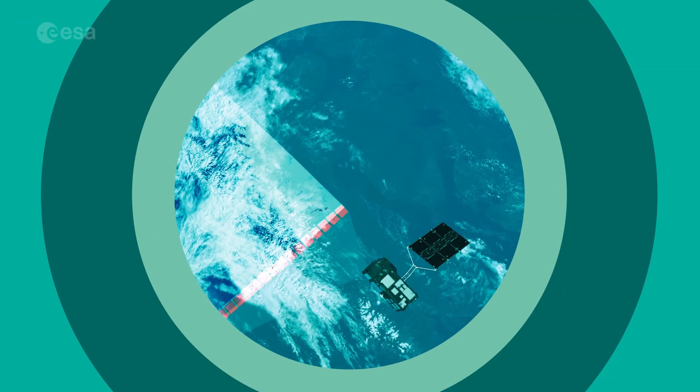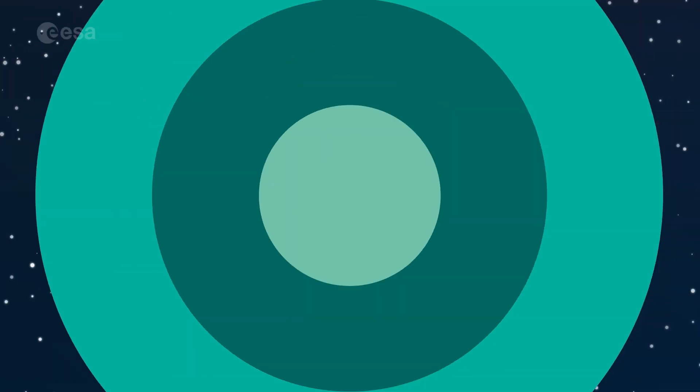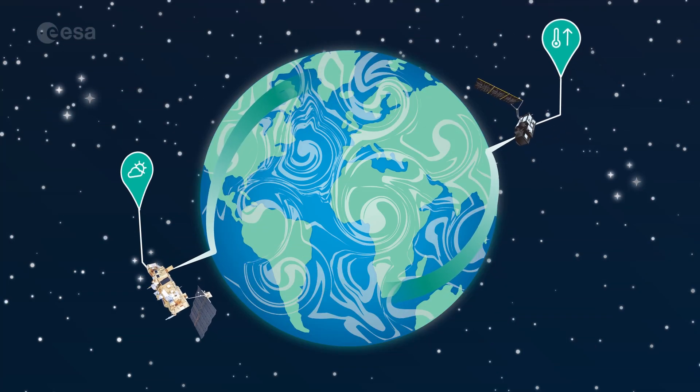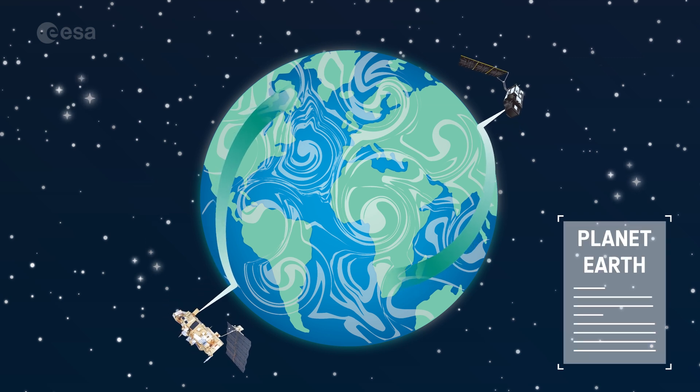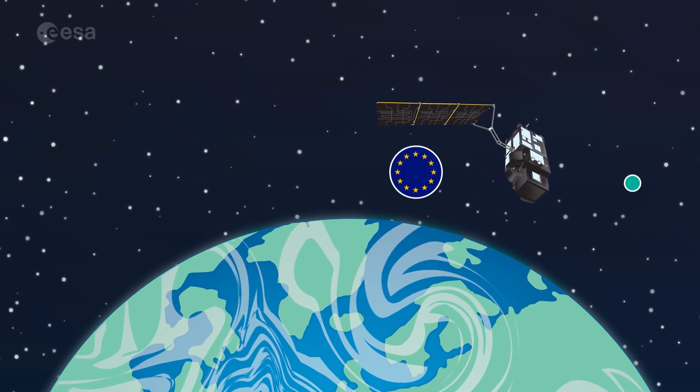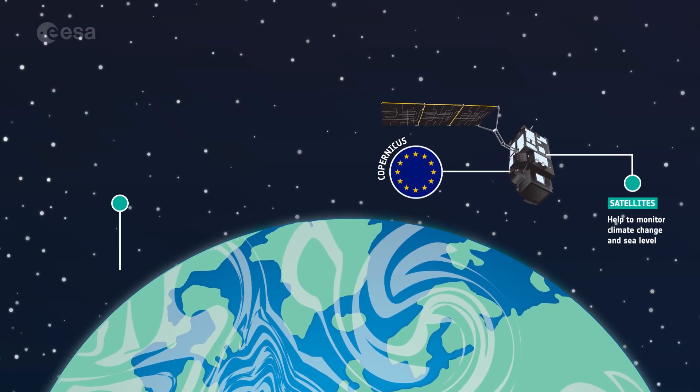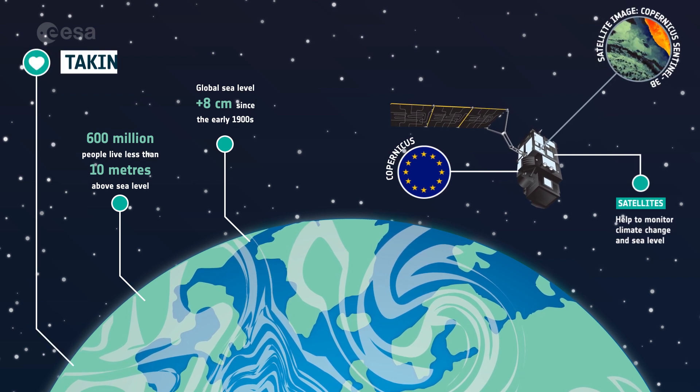From space, satellites are watching over Earth to monitor its health. Our satellites improve weather forecasts, observe the long-term effects of climate change and contribute valuable knowledge to Earth science. The Sentinel satellites for the European Copernicus program provide vital information on our environment that can help improve our daily lives.